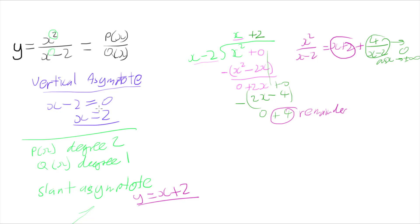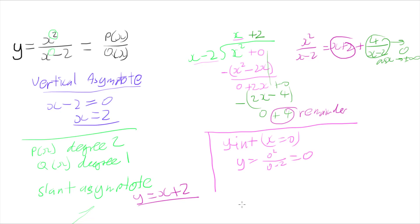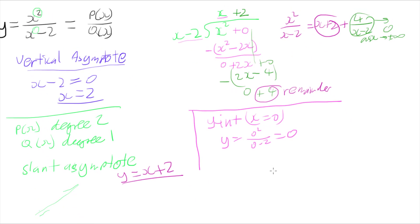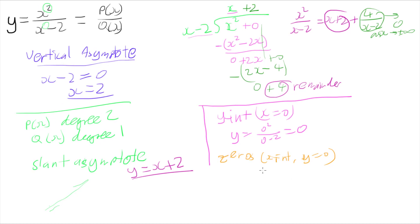Now I can look and see if there are any intercepts. For the y-intercept, that's when x equals 0: I get 0 squared over 0 minus 2, which is just 0. So I have a y-intercept at the origin. For the x-intercepts, those occur when y equals 0. Putting y equals 0 into the equation gives 0 equals x squared over x minus 2, which gives 0 equals x squared, so x equals 0. So I only have an x-intercept at the origin as well.